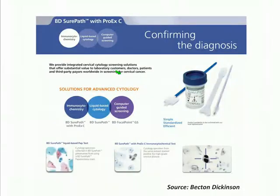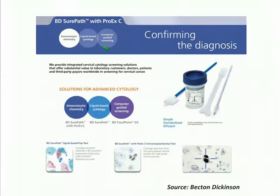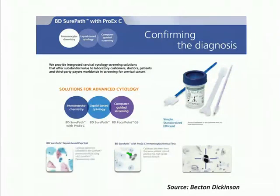We and others have exploited these processes for the development of cancer detection tests. One of them is for the cervical smear test—a collaboration with Becton-Dickinson led to the development of the ProXC reagent, which includes an antibody against MCM, and can detect premalignant and malignant cells in cervical smears, reducing the false negative rate.